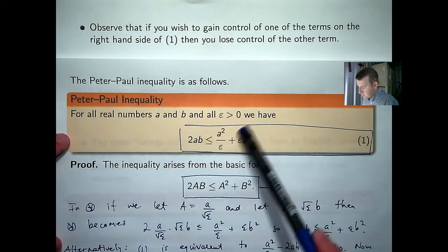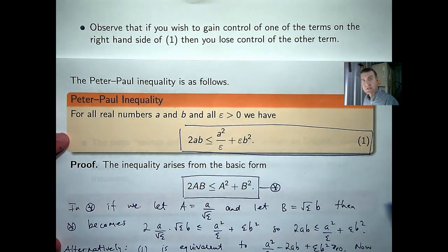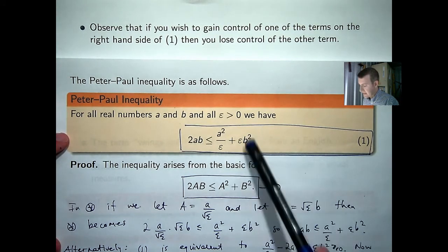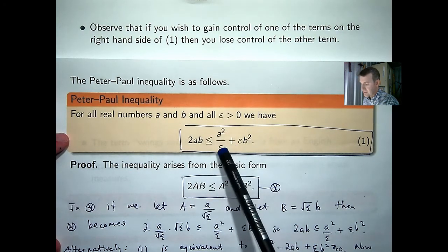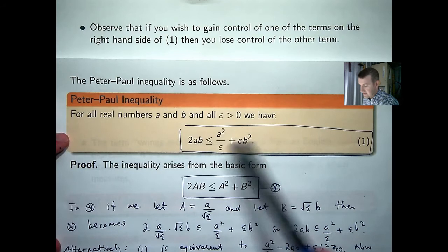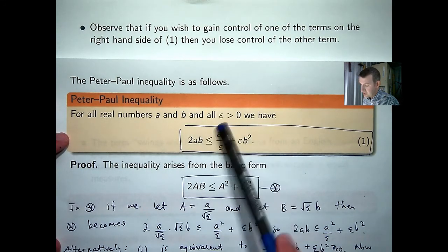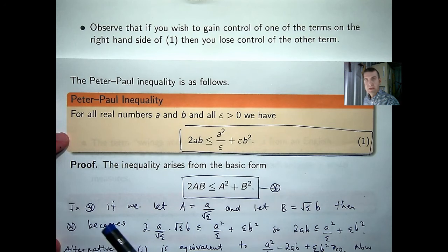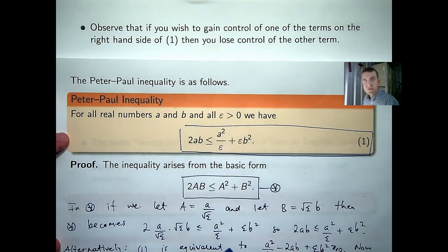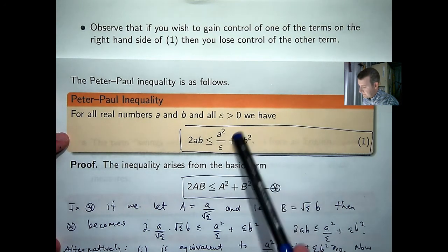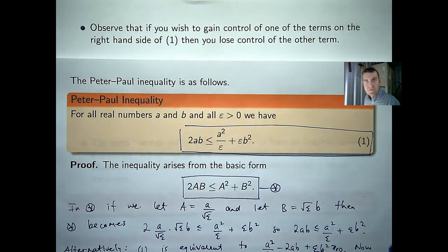So, for example, suppose you wanted to control this term. You could control this term by taking epsilon to be small, because that will give you something small then. But this term, you can't control that if epsilon is small because you're dividing by a small number, so this will be large. So, in order to control this term, you lose control of this term. Similarly, if you want to control this term, you choose epsilon to be large. But, if you choose epsilon to be large, this term will blow up, you'll lose control of that term.